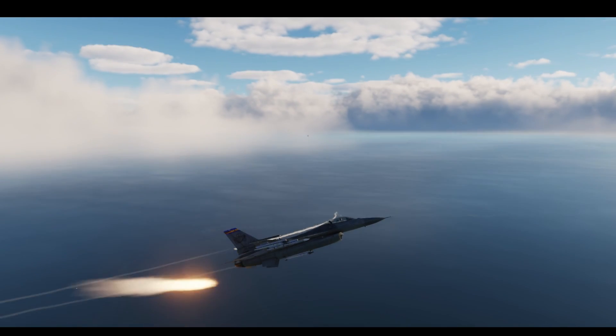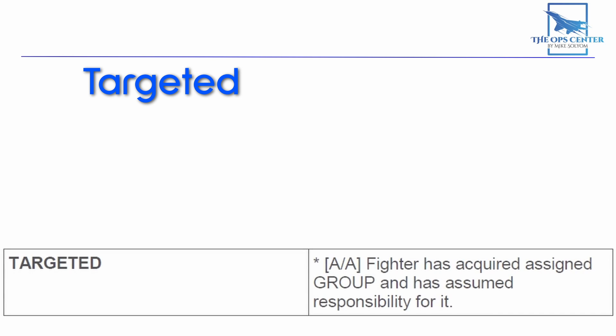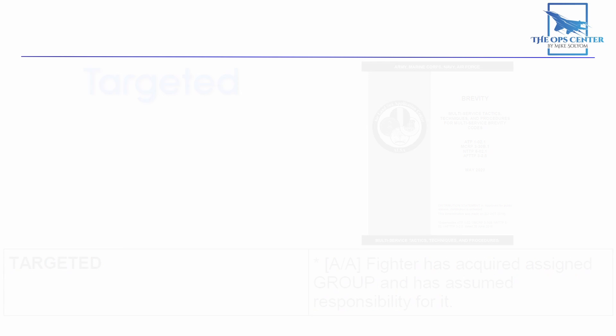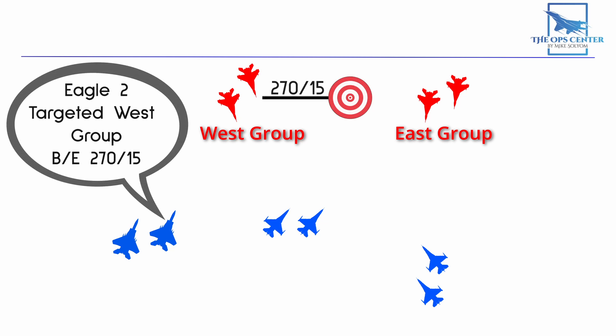In BVR, the process of good communication starts before a missile is launched. It begins with the brevity code of 'targeted.' The targeted brevity code is a simple way of letting everyone know that a fighter has acquired an assigned group and has assumed responsibility for it. In its simplest form, it sounds like this: 'Eagle 2, targeted west group.' This works if everyone has a shared battle space picture, like what you get with the data link. And if you don't have a data link, you could add on a bullseye reference: 'Eagle 2, targeted west group, bullseye 270-15.'